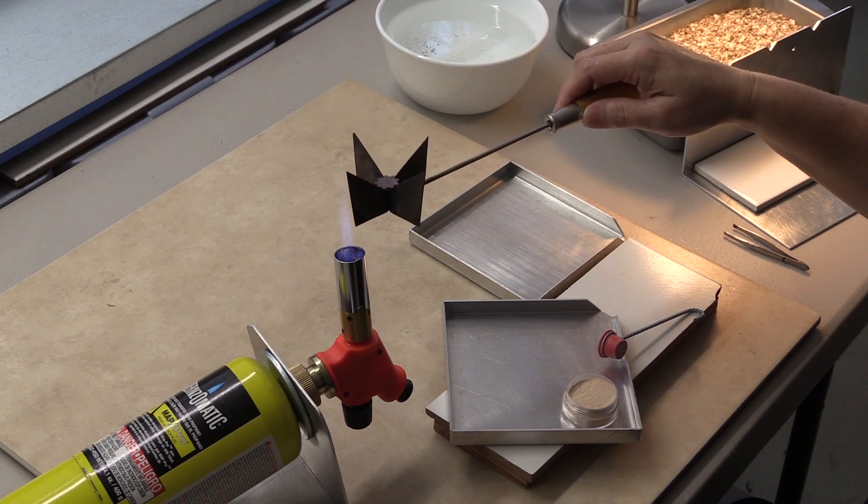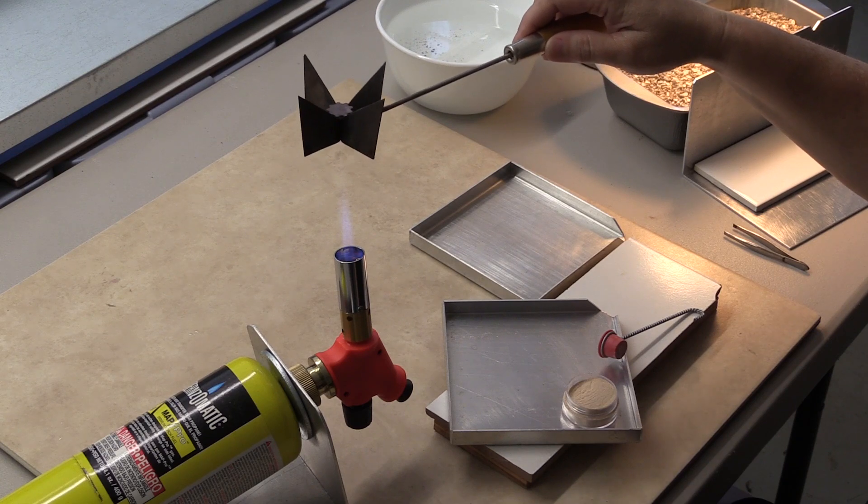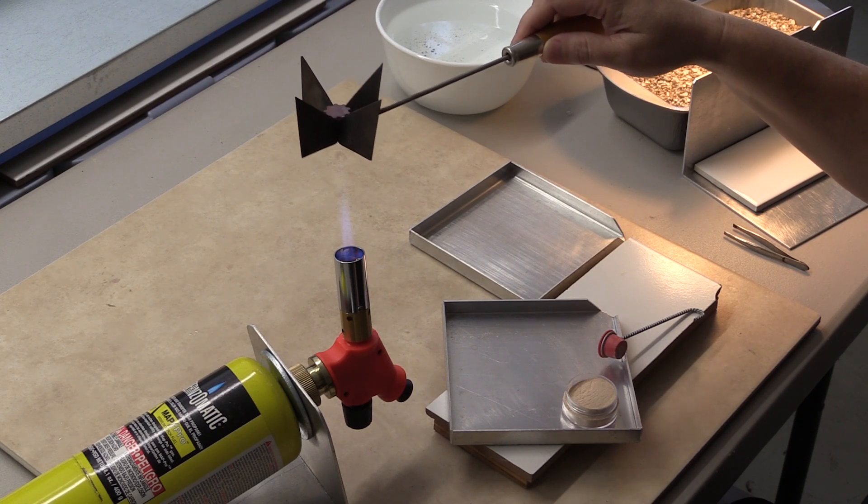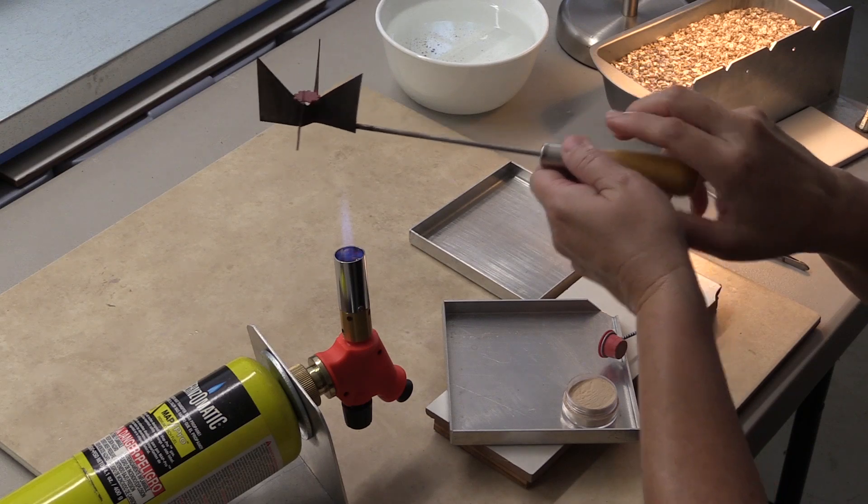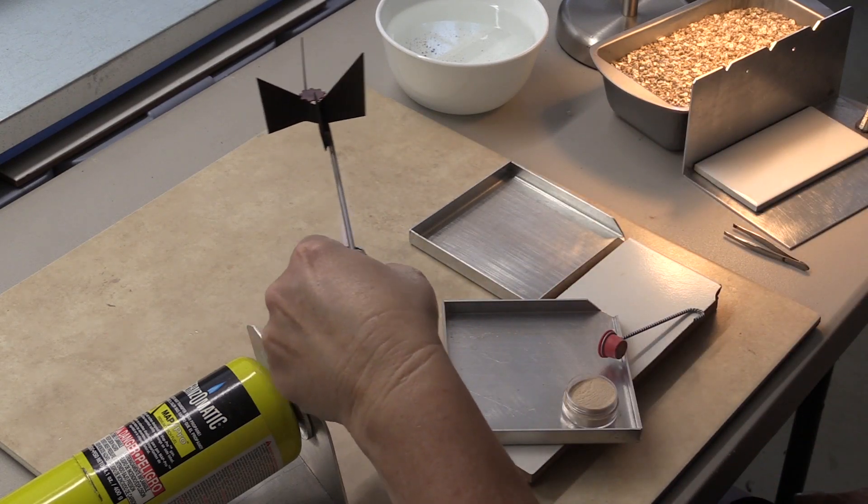I don't ever work down here. I always work in the tail of the flame. This way you will not burn your enamel or have black spots, brown spots or gray spots.